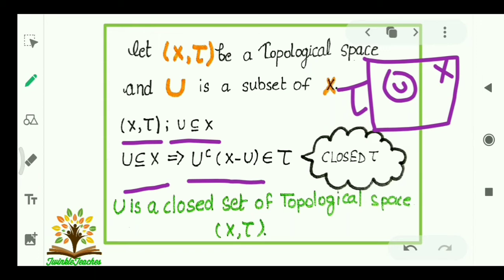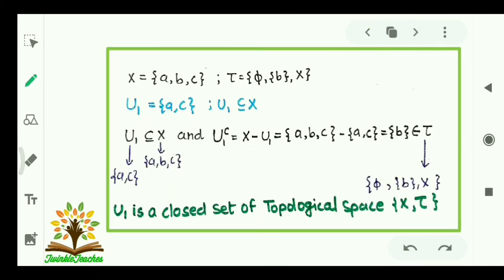U complement means this portion. Let us understand it with the help of an example. X = {a, b, c} and τ contains three elements: φ, singleton {b}, and X.